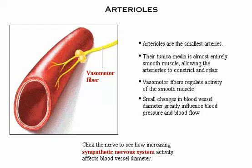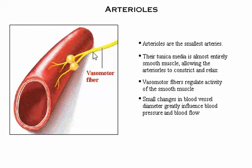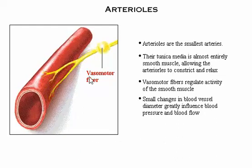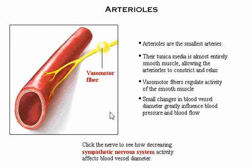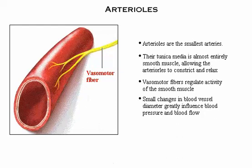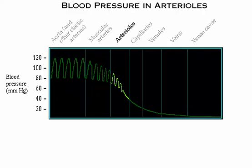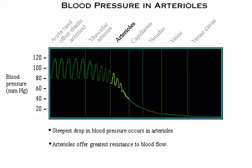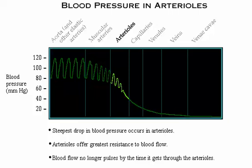Click the nerve to see how increasing sympathetic activity affects blood vessel diameter. Click the nerve again to see how decreasing sympathetic activity affects blood vessel diameter. In the graph of blood pressure throughout the circulation, note that the steepest drop in blood pressure occurs in the arterioles, which offer the greatest resistance to blood flow. Note also that blood flow no longer pulses by the time it passes through the arterioles.